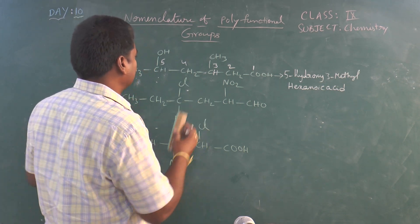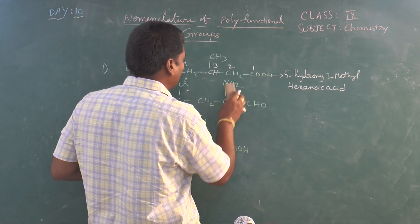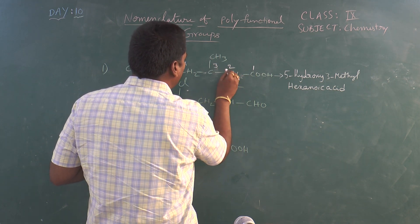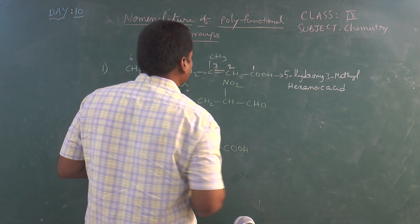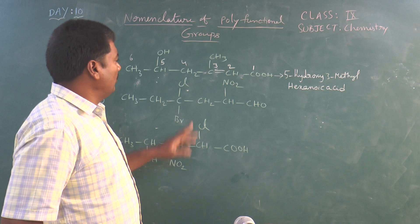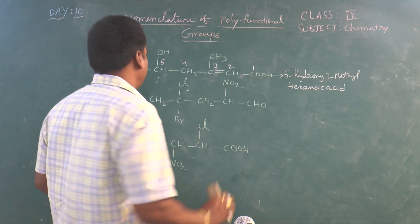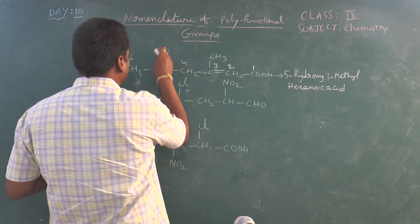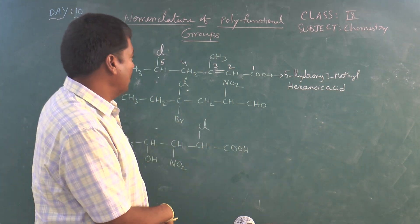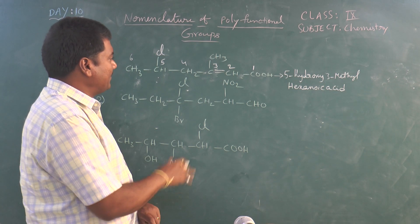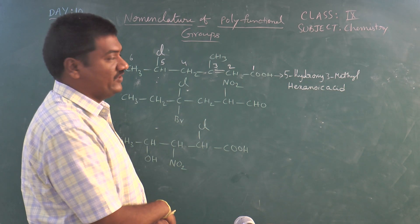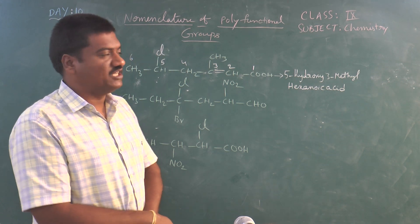Now a small change in this compound: suppose a double bond is present between the second and third carbon atoms, and in the place of the OH group, a halogen — chlorine — is present. The root word does not change; the numbering remains 1 through 6, so 'hex' is fixed. The suffix 'oic acid' is also fixed. The double bond at the second position changes the primary suffix to 'ene', giving 'hex-2-ene'.